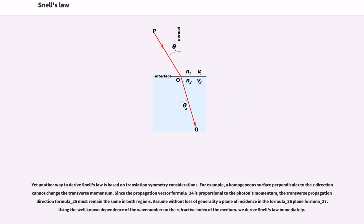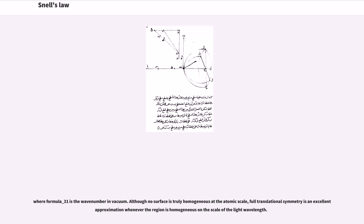For example, a homogeneous surface perpendicular to the z-direction cannot change the transverse momentum. Since the propagation vector formula underscore 24 is proportional to the photon's momentum, the transverse propagation direction formula underscore 25 must remain the same in both regions. Assume without loss of generality a plane of incidence in the formula underscore 26 plane formula underscore 27. Using the well-known dependence of the wave number on the refractive index of the medium, we derive Snell's law immediately, where formula underscore 31 is the wave number in vacuum. Although no surface is truly homogeneous at the atomic scale, full translational symmetry is an excellent approximation whenever the region is homogeneous on the scale of the light wavelength.